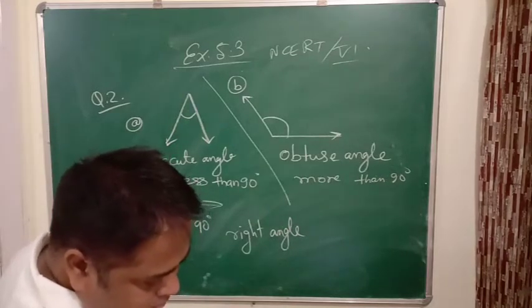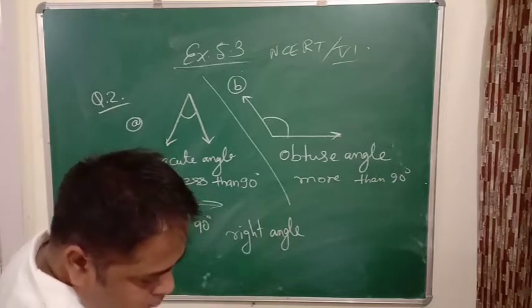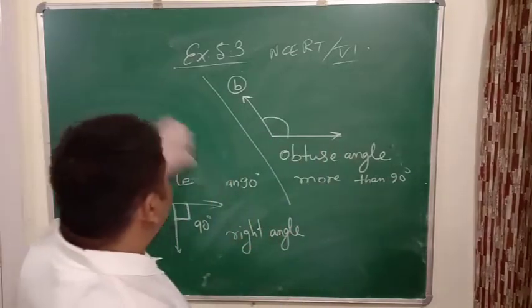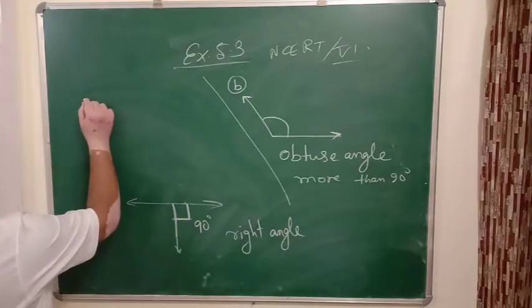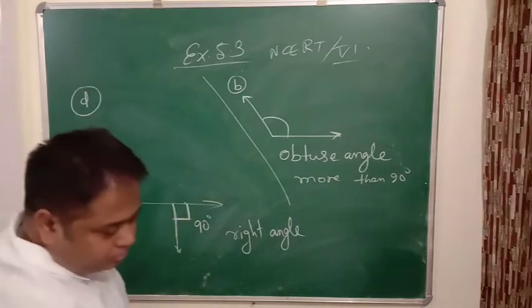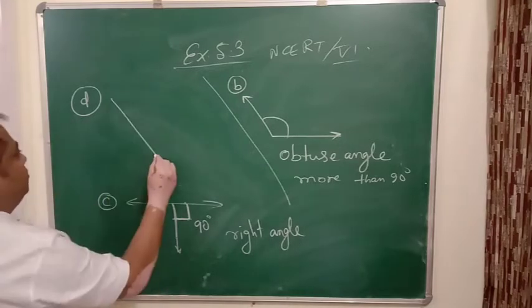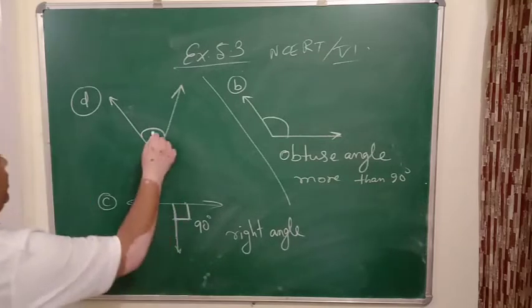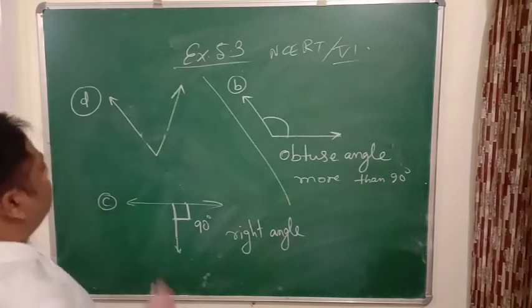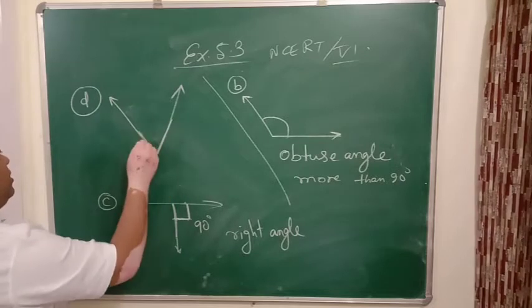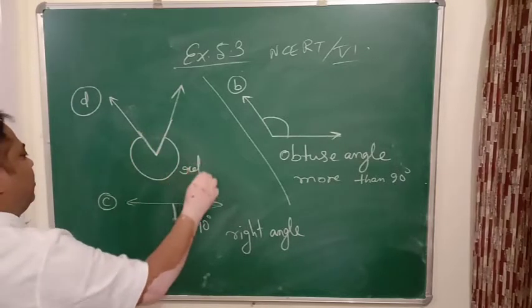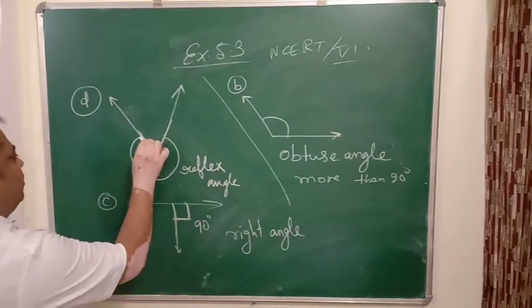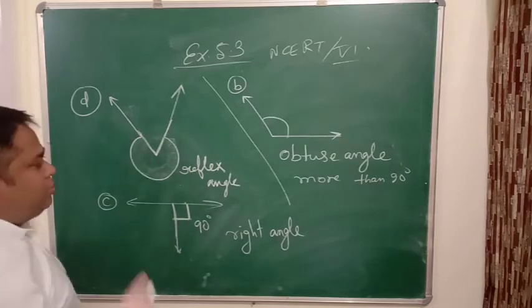Then next is D. If this should have been the angle, I would have said acute. But this is not the angle which is given in the book. In the book, the angle which is indicated is this one. This is reflex angle. This part is acute but it is not asked.